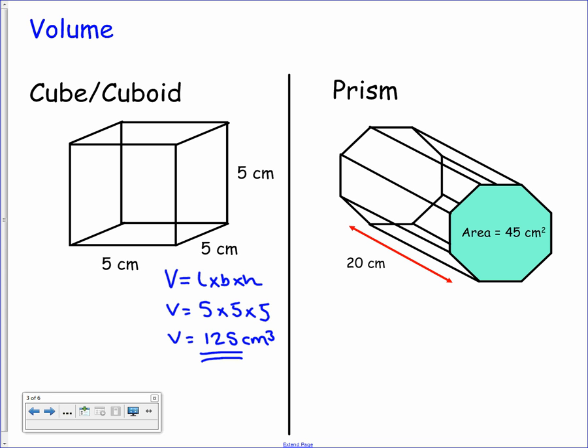The second example is a prism. Now you are given the formula for this on your formula sheet so there's no need to remember it. The formula is V equals AH where A is the area of the cross section. You can clearly see the cross section of this prism is a hexagon and it has an area of 45 square centimeters. So all we need to do here is substitute this into the formula so we have 45 multiplied by the height of 20 so that gives us a total volume of 900 cubic centimeters. Nice and straightforward.